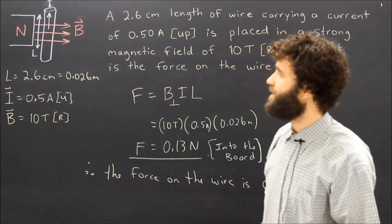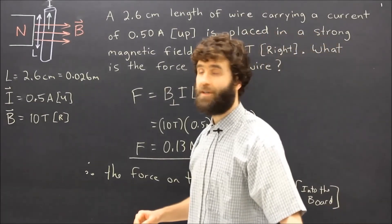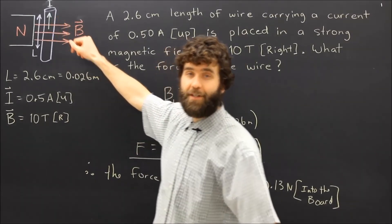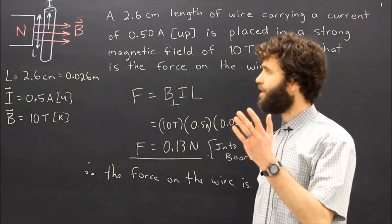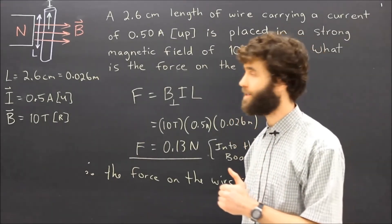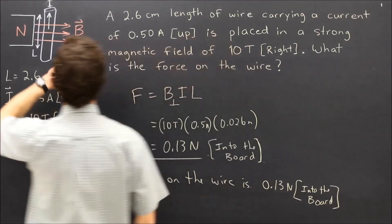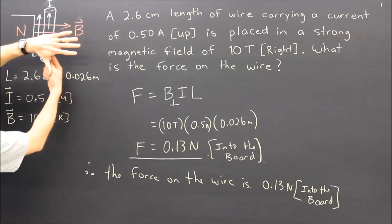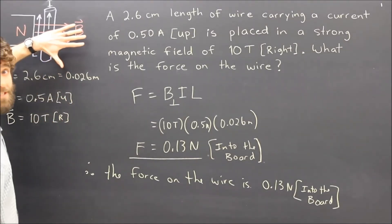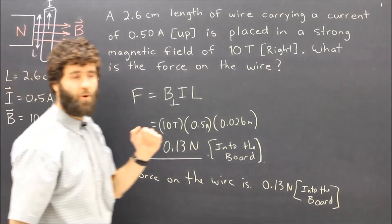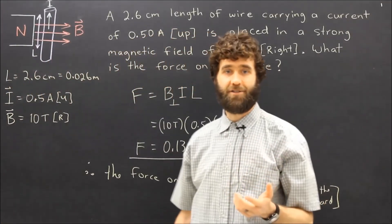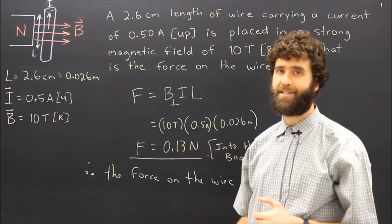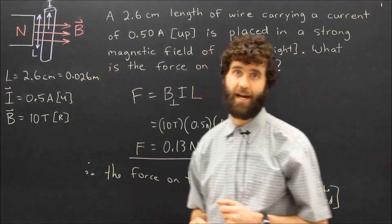Now, if you are using a different definition of current called the electron flow, the electron flow is the opposite direction of the conventional current, so electron flow would be down. We would then need to use our left-hand rules to determine the direction of the force. The magnetic field line is still to the right, the electron flow would be down, and the palm would still be facing into the board, indicating the direction of the force is into the board. So both give you the same answer. Just ask your teacher which rule you're going to be using — the right-hand rules or the left-hand rules — and that's just a factor of which definition of current you would have.